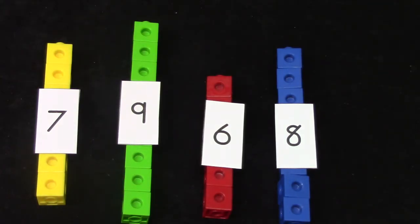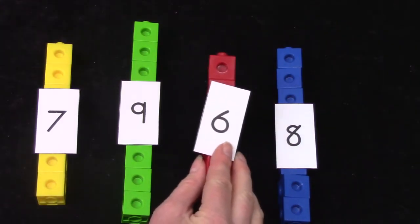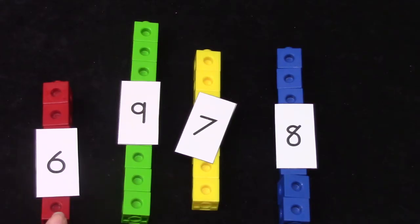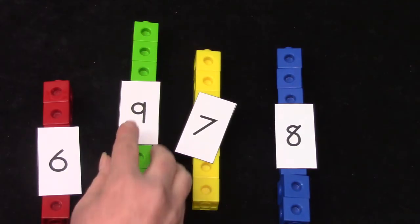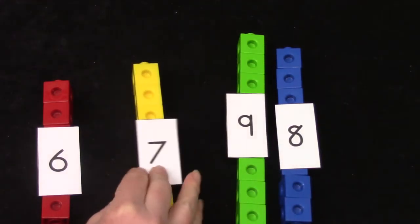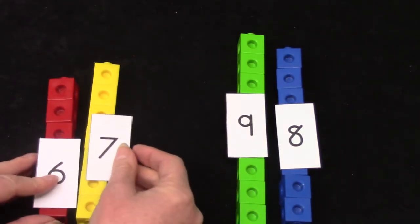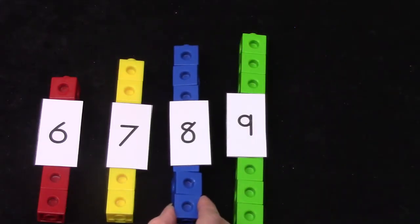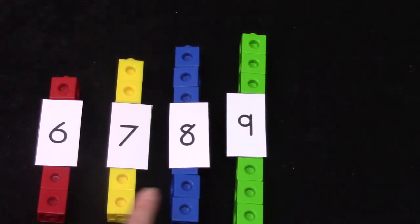Now we are going to put these in order from the fewest to the most. Which one has the fewest blocks? I hope you said six. So we're going to put six first because it has the fewest. What would come next? You're right. It's number seven. Seven is more than six. Now which one would come next? We have six, seven. You're right. Eight would come next in order. Six, seven, eight, nine.